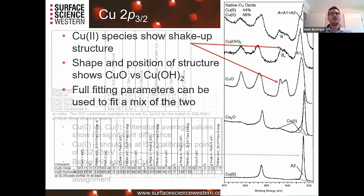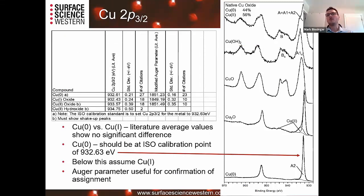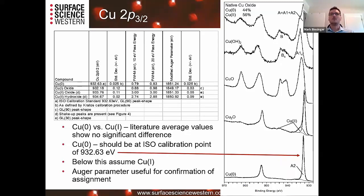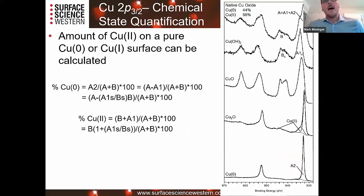Looking at Cu0 and Cu1+ species, they appear at nearly the same binding energy — a single peak around 932.2 to 932.6 eV — making it very hard to distinguish between them. One way around that is to use the Auger parameter: Cu0 is 1851.2 eV and Cu1+ is 1849.1 eV. However, if you have a mix of species it becomes very difficult. We've worked out math that uses the shake-up structure of Cu2+ to calculate how much Cu2+ versus Cu0 plus Cu1+ is present on a surface.